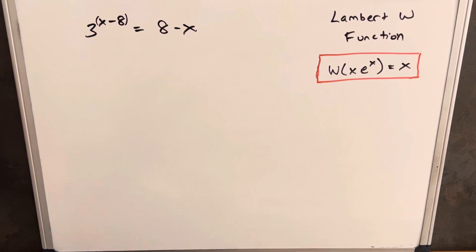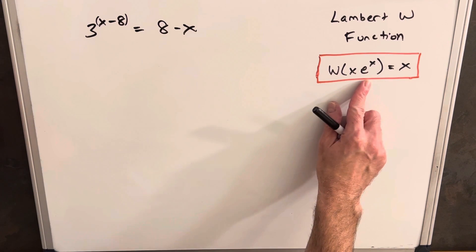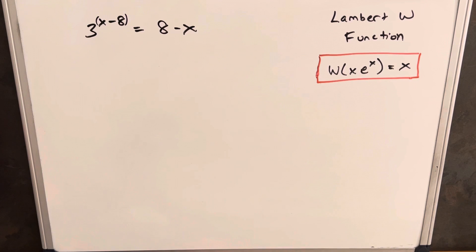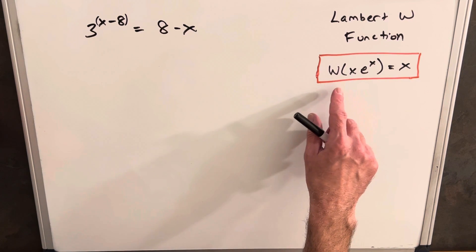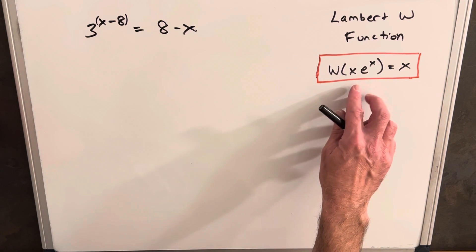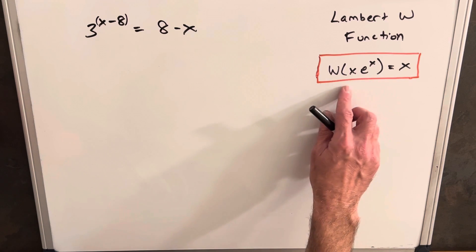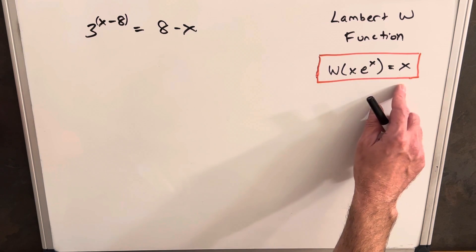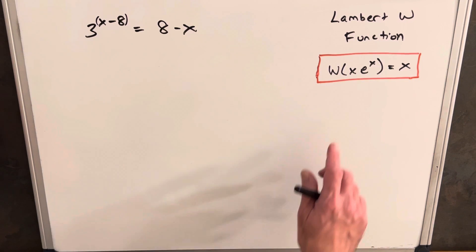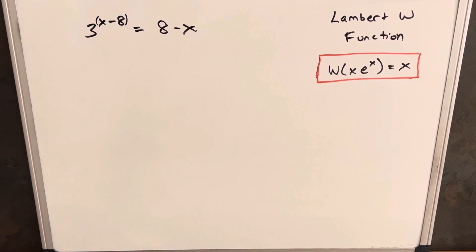Start with our strategy. What we want to do is use this formula to simplify things, because when we have it in this format with the same coefficient and exponent, we just return that same value — so W(x · eˣ) = x.